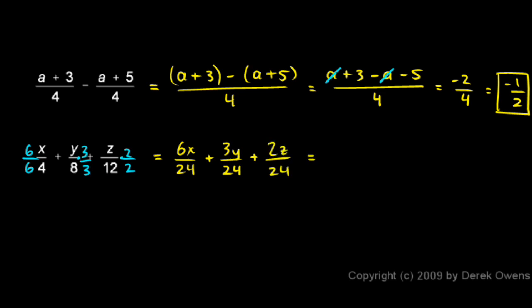And now they can be combined into a single fraction. This will be (6x + 3y + 2z) all over 24.